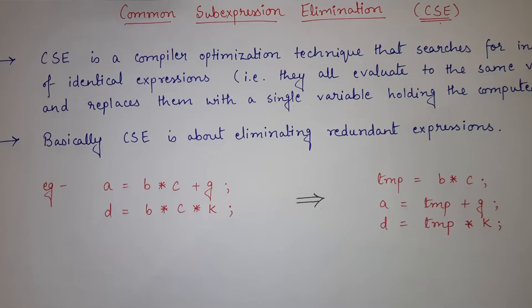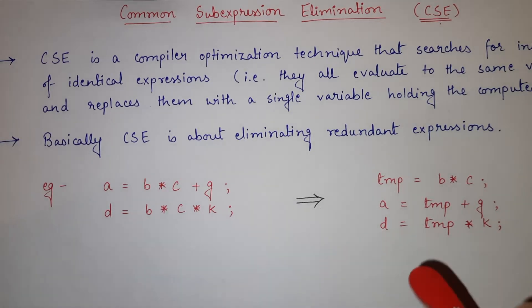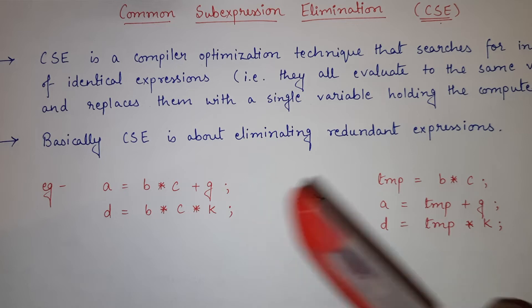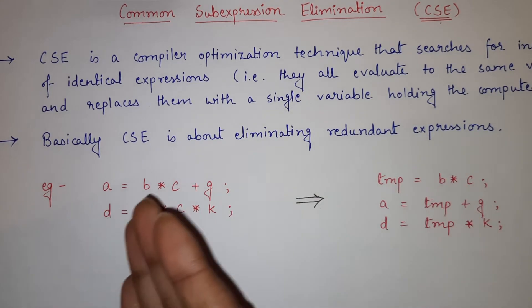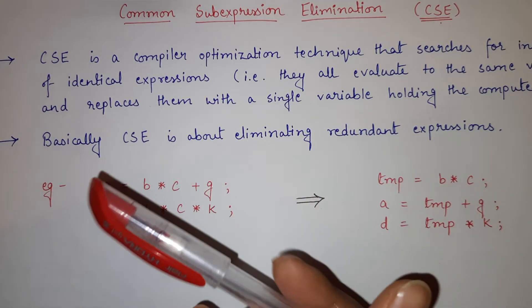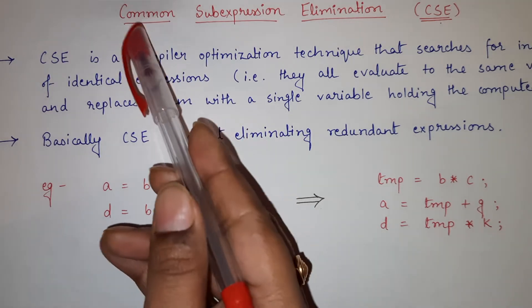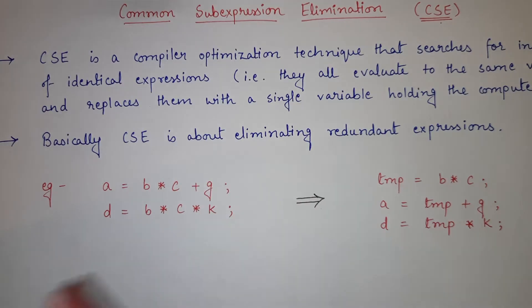In our previous video, I told you about code optimization techniques in compiler. We have seen that there are mainly two types of code optimization technique: local optimization and global optimization. I also explained that for local optimization and global optimization, we have different techniques. Common sub-expression elimination is one of the types of local optimization.